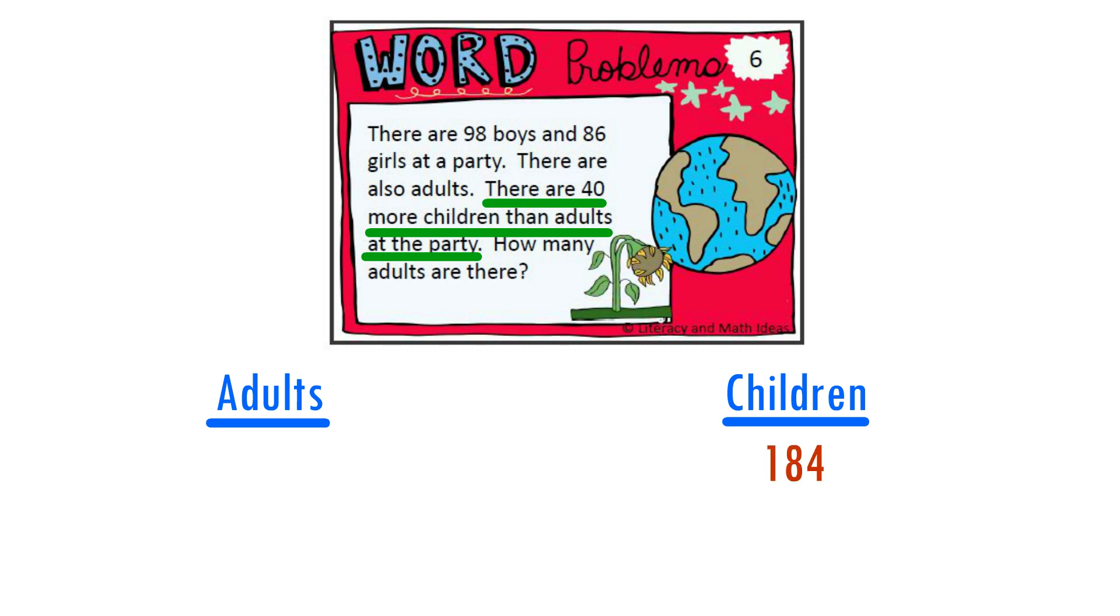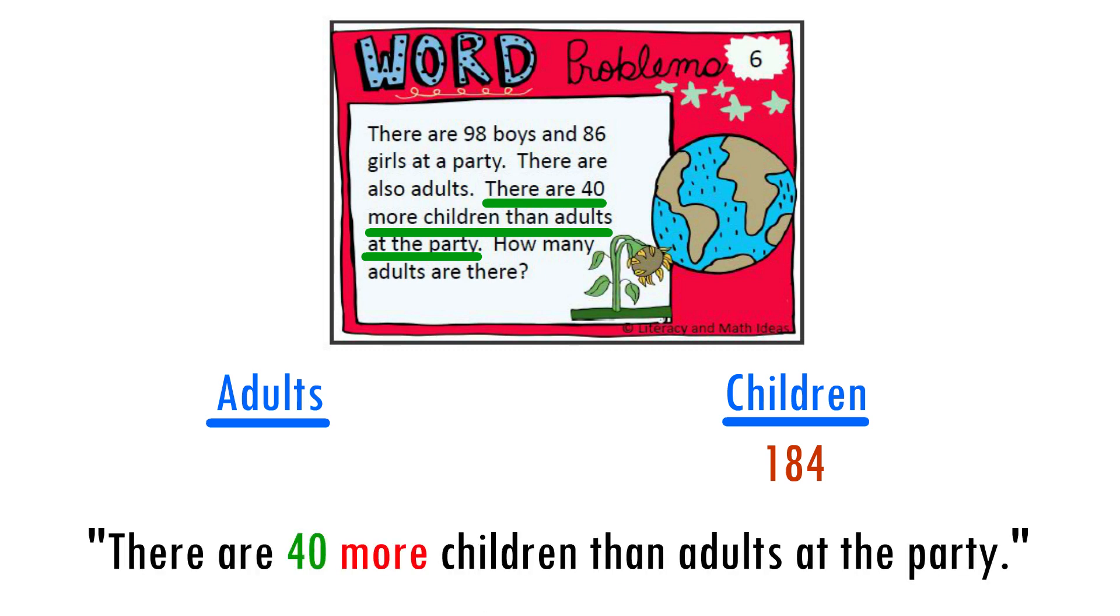There are 184 children at the party. So we know how many children are at the party, but we still don't know how many adults are there. We can use that important clue given to us to find out the total number of adults.